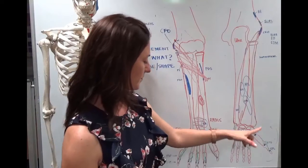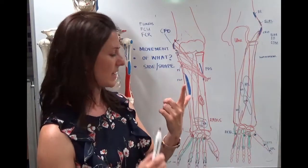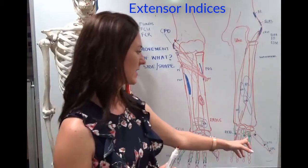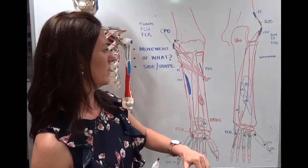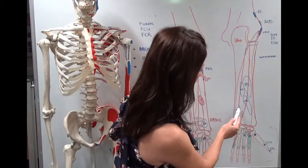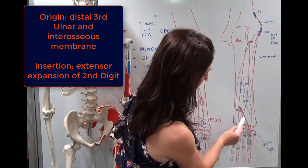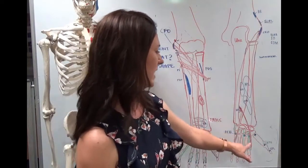Then the index finger, so we call that the extensor indicis. So in this case we leave out the word digitorum. So, the extensor indicis, it starts here on the ulna, originates, and then comes down into the second digit, extensor indicis.